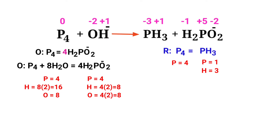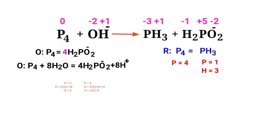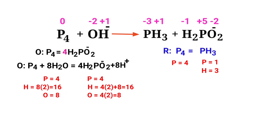Now balance the hydrogen atoms in the oxidation half reaction by producing H⁺ ions. The number of atoms are now balanced in the oxidation half reaction. Now move on to balance the number of atoms in the reduction half reaction.